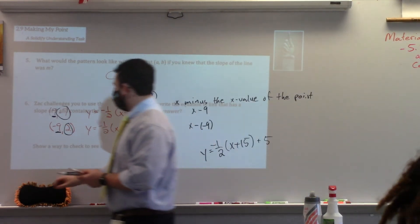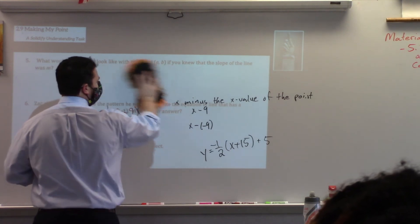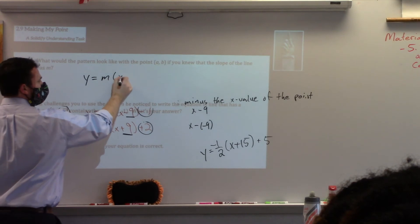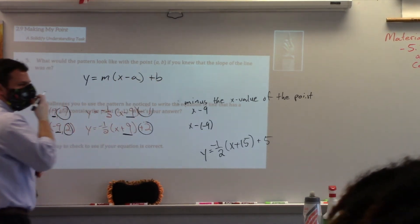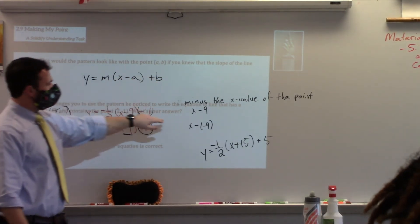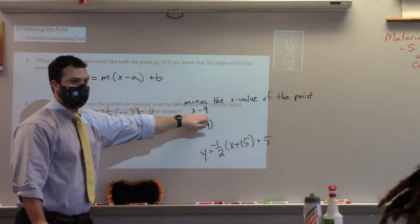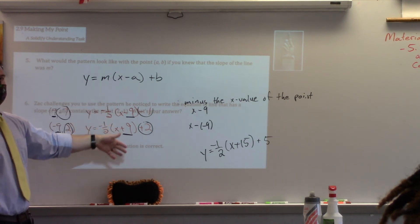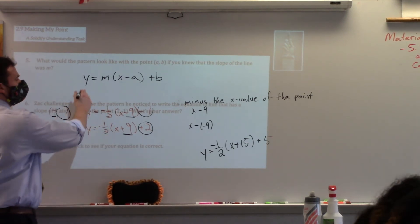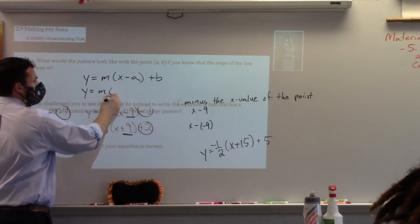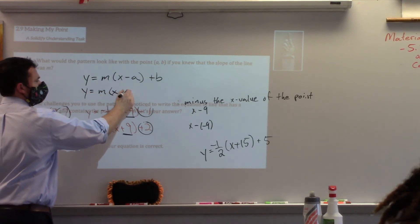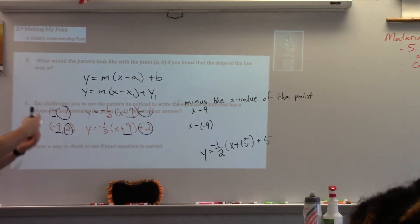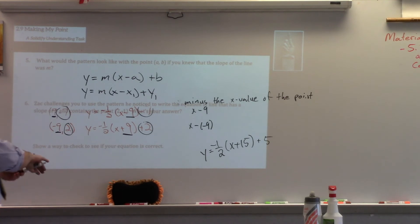Number 5. What would the pattern look like if the point was a comma b? I think I saw everyone say y equals m times x minus a plus b. Notice, Donovan, you even said, right here, you were subtracting a positive 9, subtracting a negative 9. That's what explained these sign changes. What should this remind you of? Y equals mx plus b. Point slope. Point slope. Right? That's not just y equals mx plus b. That's y equals m times x minus x1 plus y1.